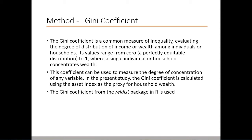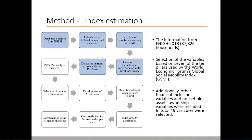The process of estimation of the index is as follows. The information was taken from the National Household Income and Expenditure Survey carried out in 2018. The size of this national coverage sample was about 87,000 households, representing 125 million inhabitants from Mexico. The monetary variables were deflated. The selection of the assets was based on seven of the 10 pillars of the Global Social Mobility Index, including qualitative variables representing the ownership of different types of assets, and quantitative variables according to average monthly expenses or income from certain activities. Additionally, other financial inclusion and household asset ownership variables were included. It was necessary to transform some of them from multi-level to binary. In total, 49 variables were selected.